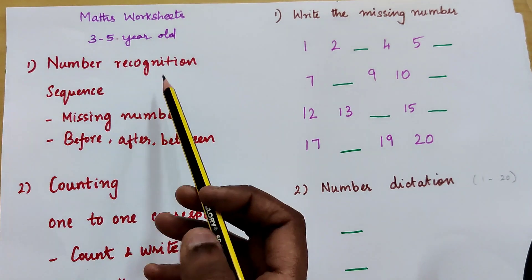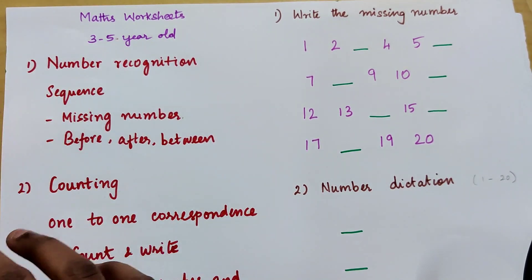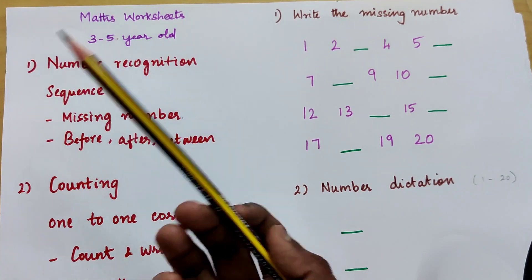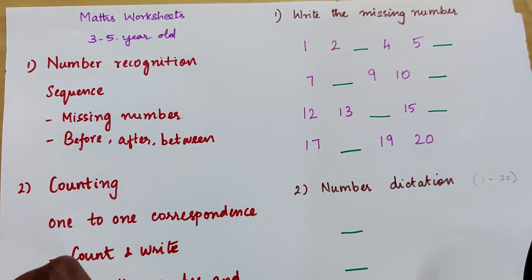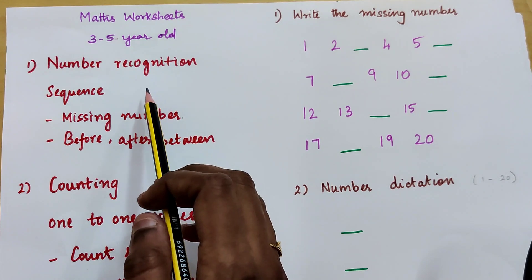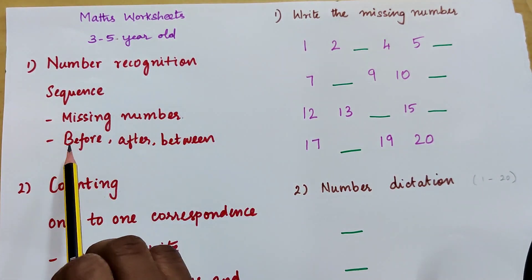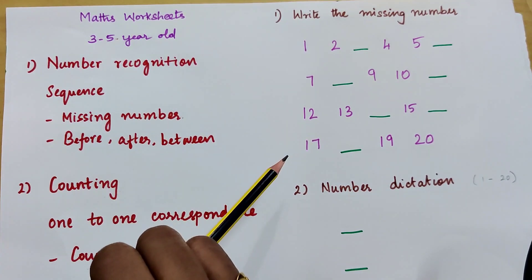First work on number recognition. Begin teaching them 1 to 10, then up to 20, then up to 50, then up to 100. To check whether they know the sequence or order of the numbers correctly, we can make them do missing number activities and also before, after and between number activities.